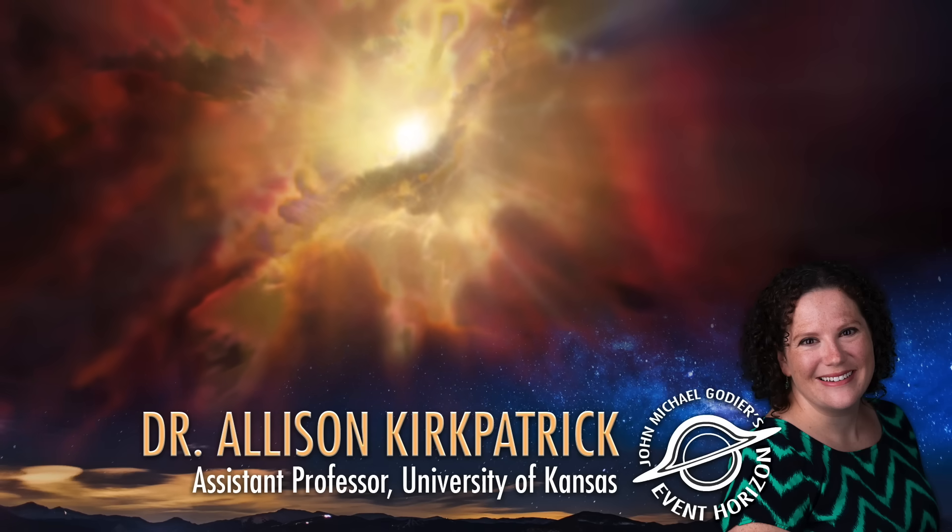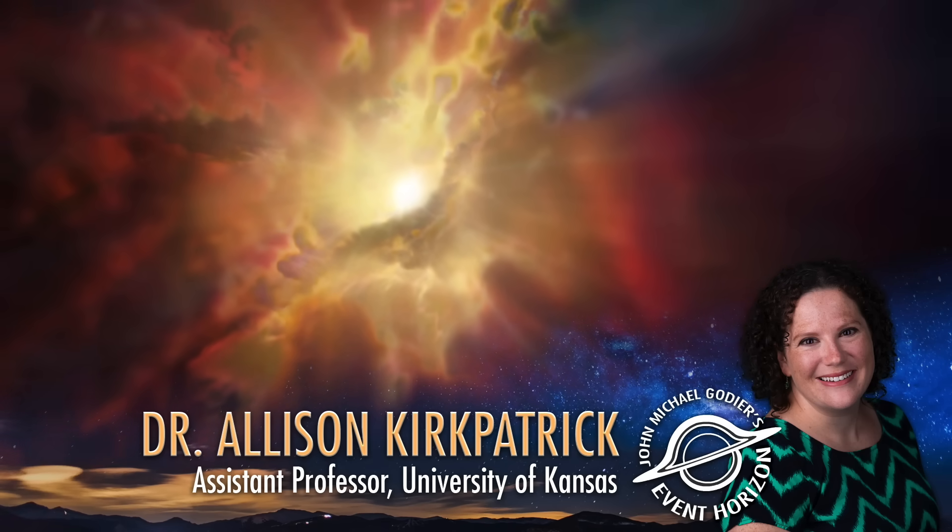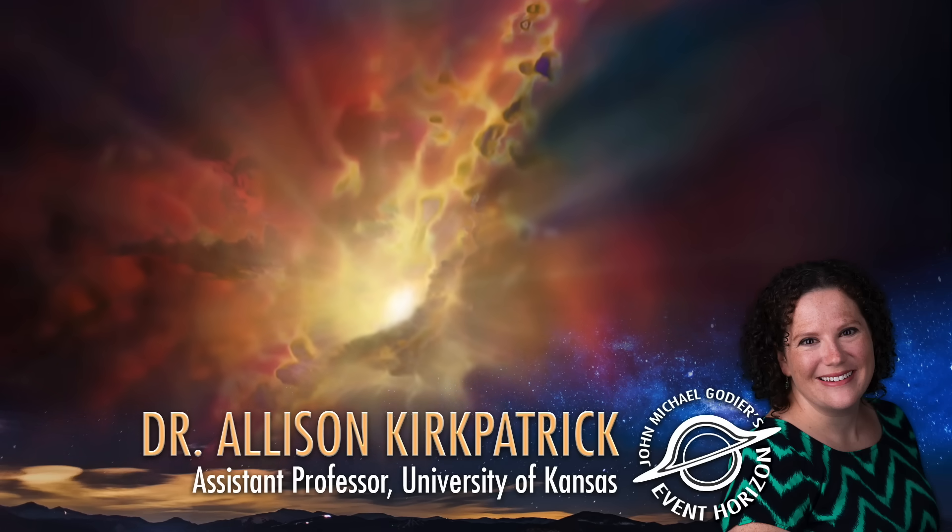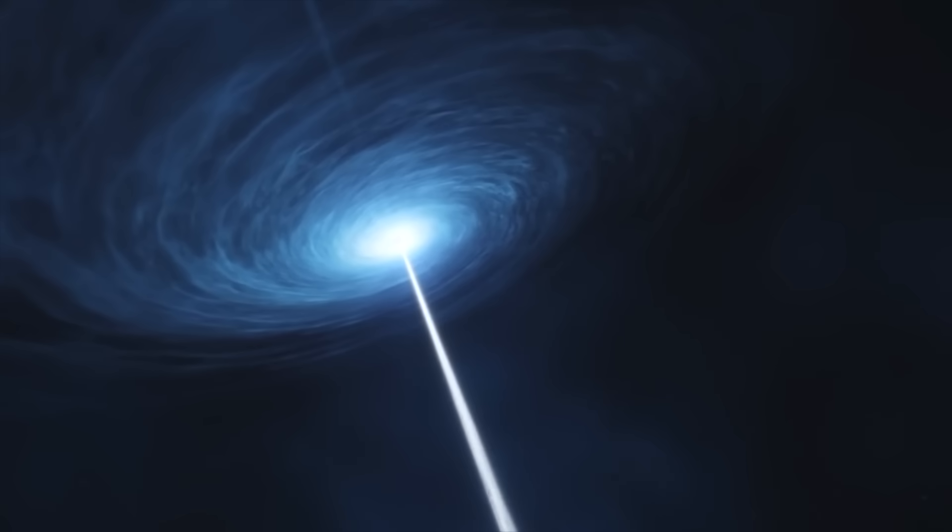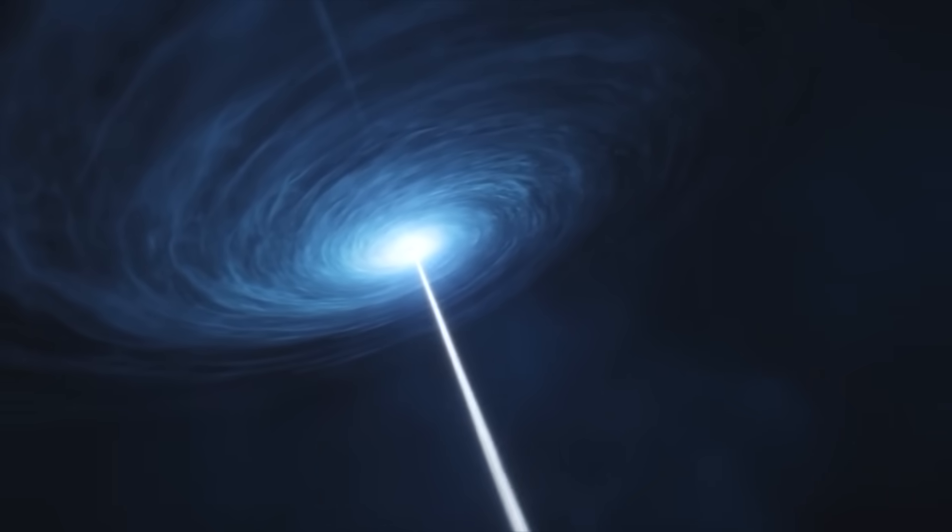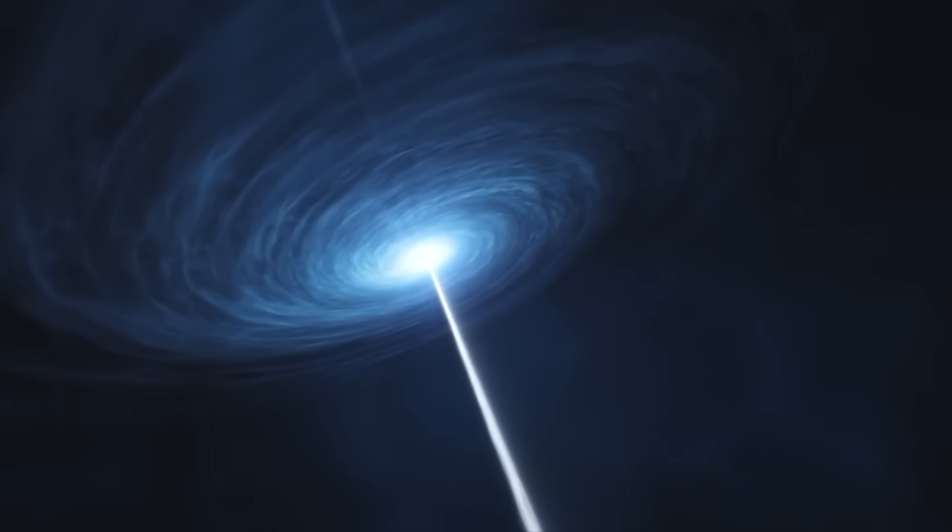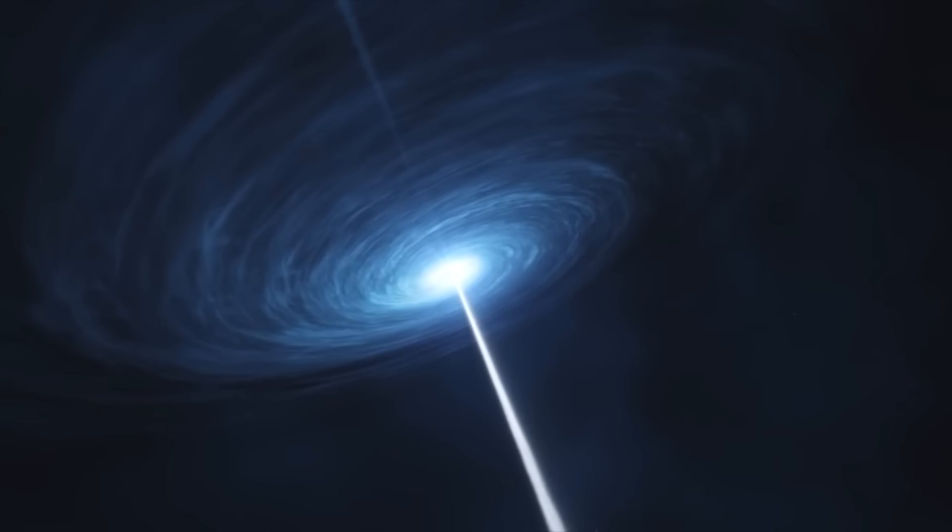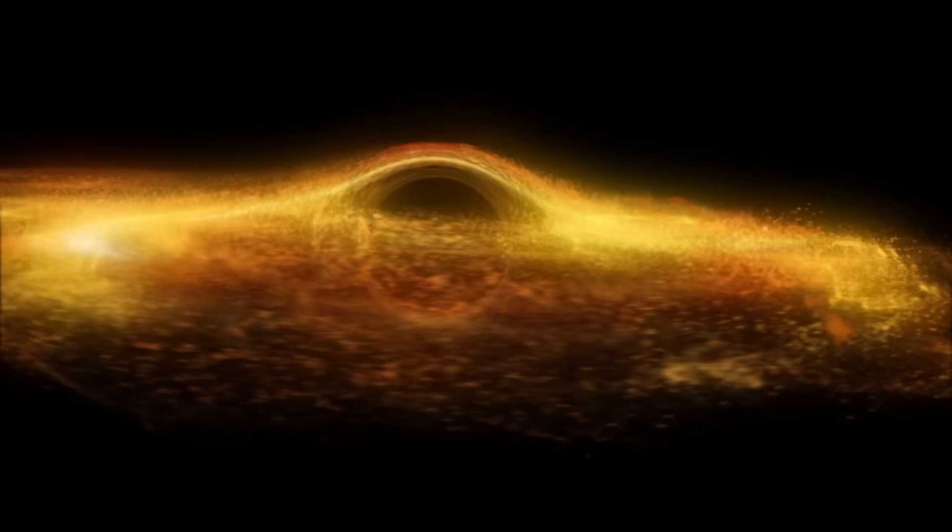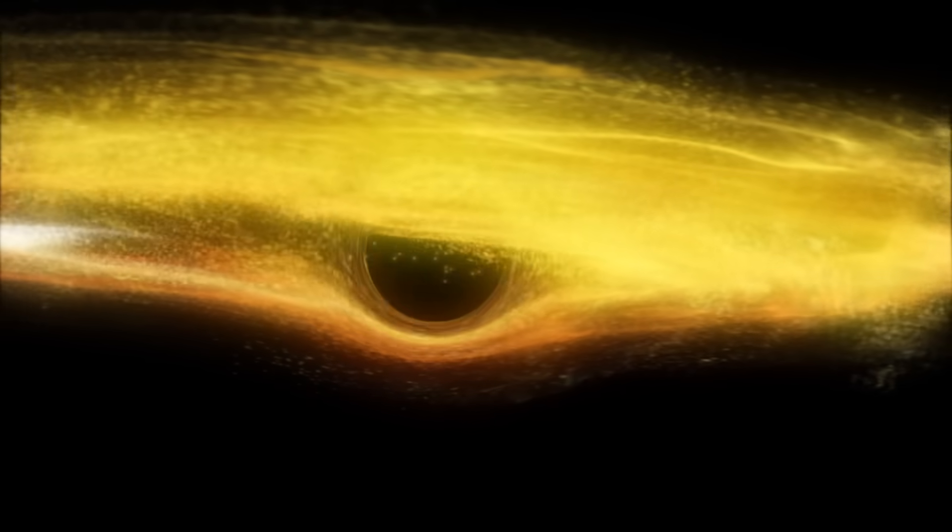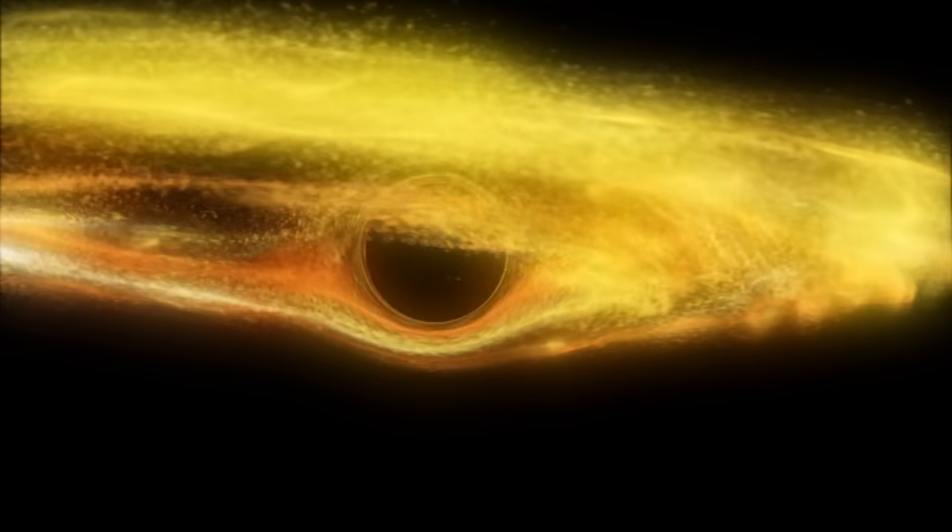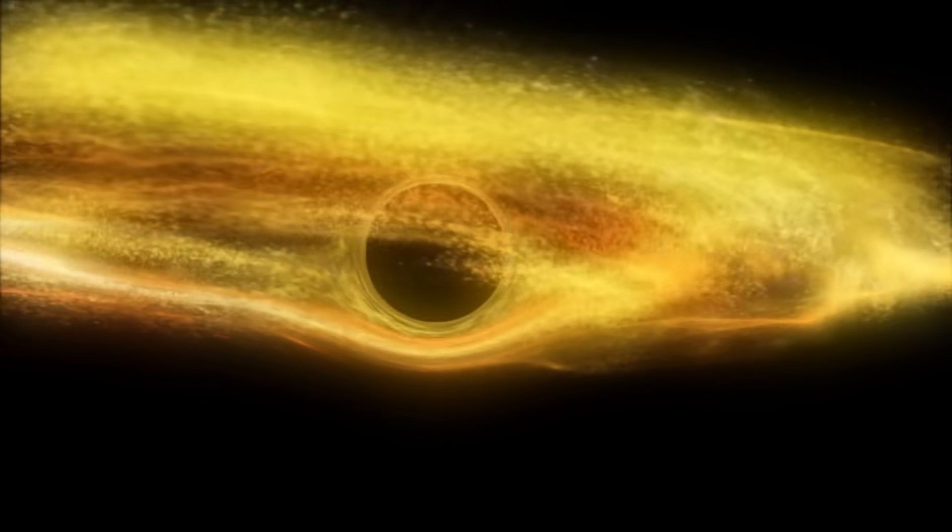Sure. So quasars are kind of this catch-all term that gets thrown around a lot. When we in the community use it, we are referring to the brightest supermassive black holes in the universe. And when we say that a black hole is bright, what we mean is that the material right around the black hole is very bright. The black hole itself is black. But material that gets too close to the black hole falls onto it, and not all the photons are captured by the black hole itself, and those photons become very luminous, and we can see them.